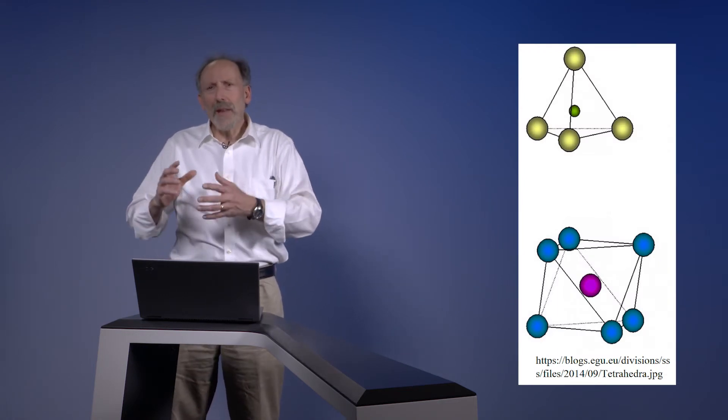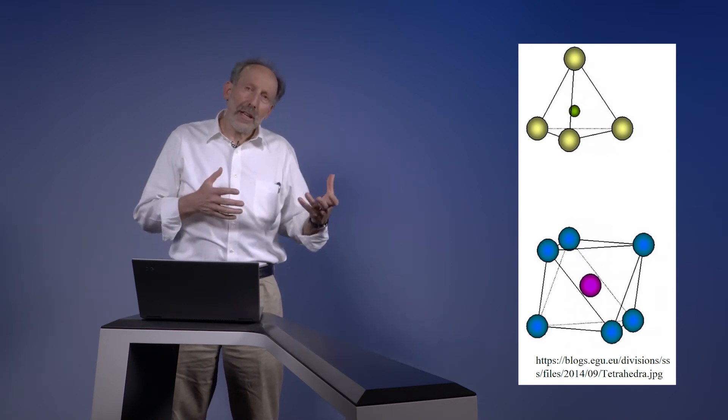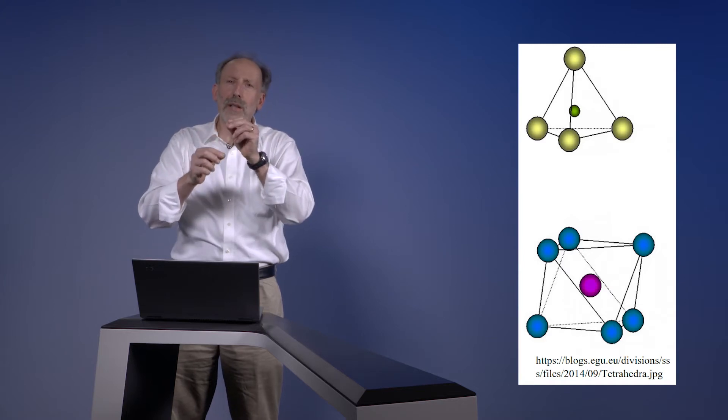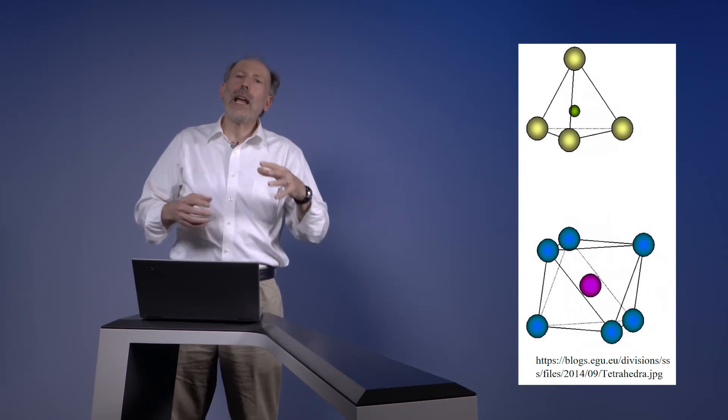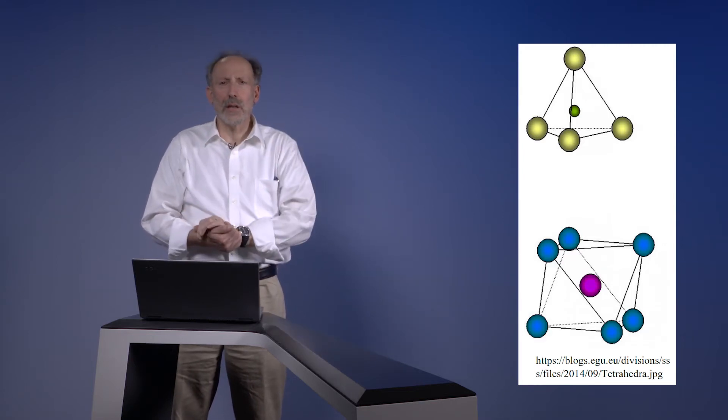The basic building blocks within the silicon dioxide realm are two. We have a tetrahedra, which has four oxygens surrounding one silicon, or we can have an octahedra, which has six oxygens surrounding one silicon.